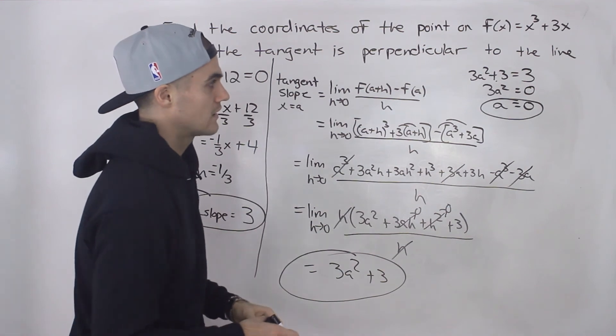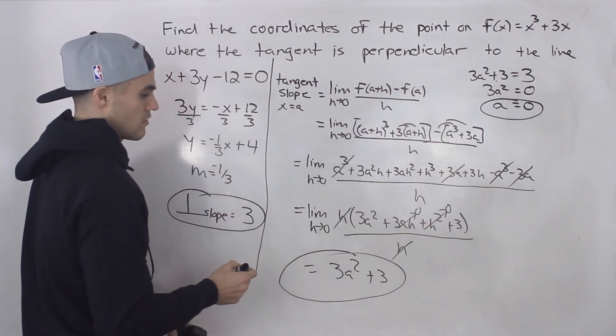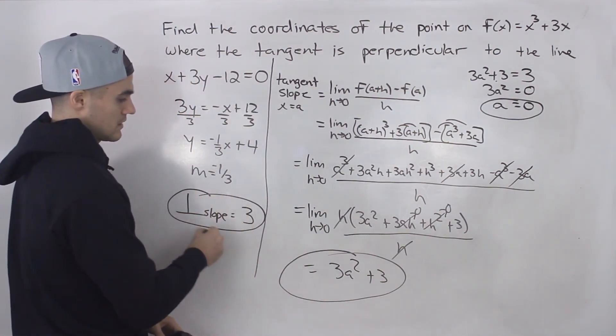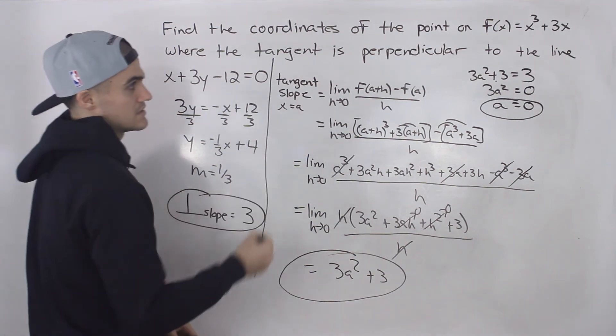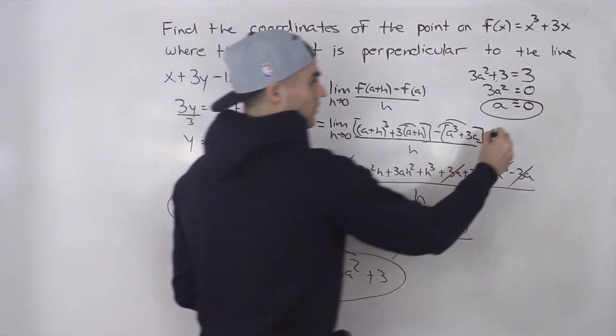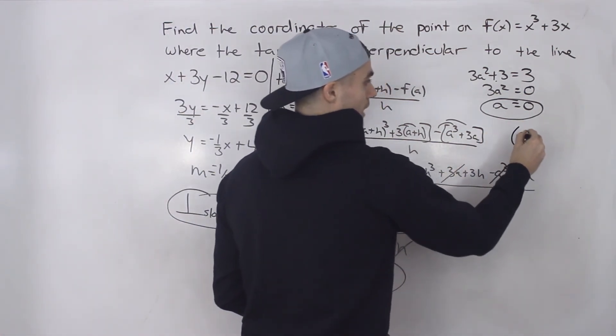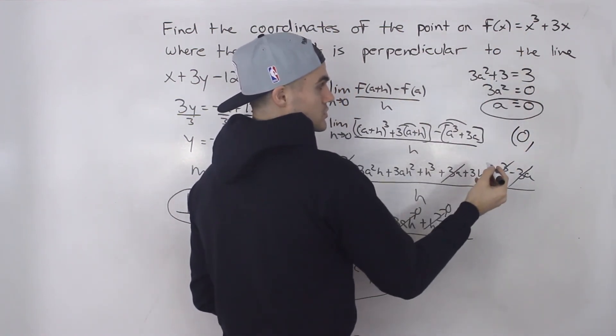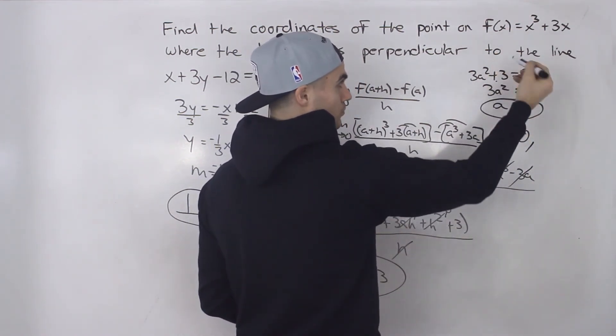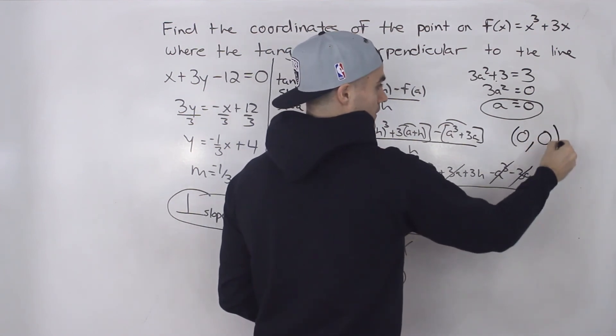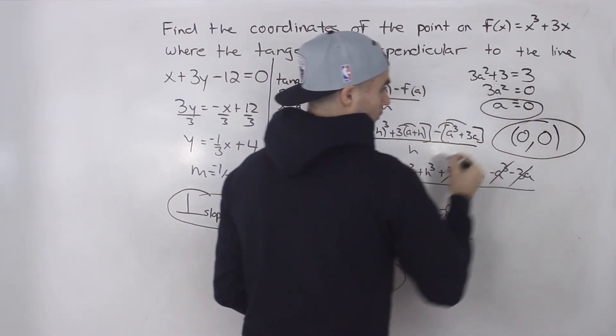So the x value where that slope of the tangent is 3 is 0. So 0, and then to find the y value, just plug in 0 into the original function, 0³ + 3(0) is 0. So it's actually happening at the origin.